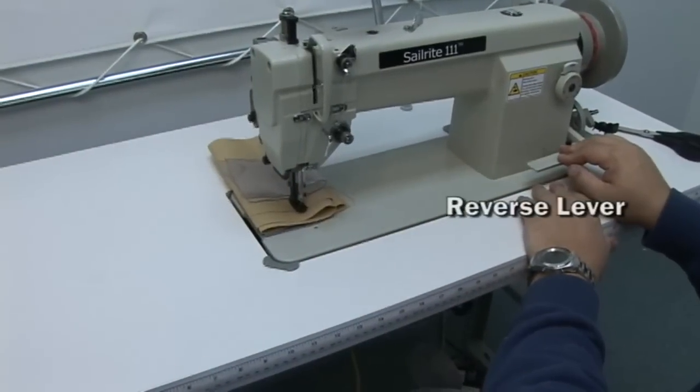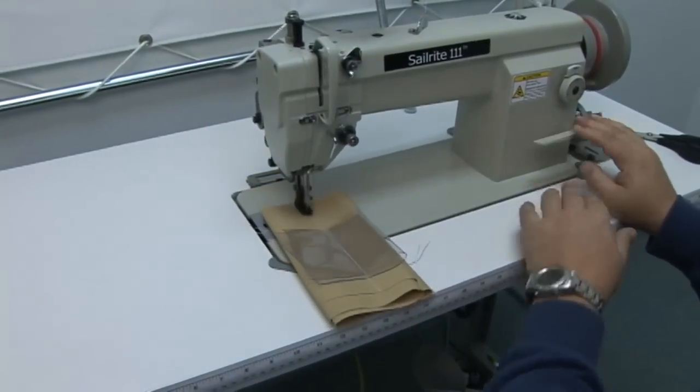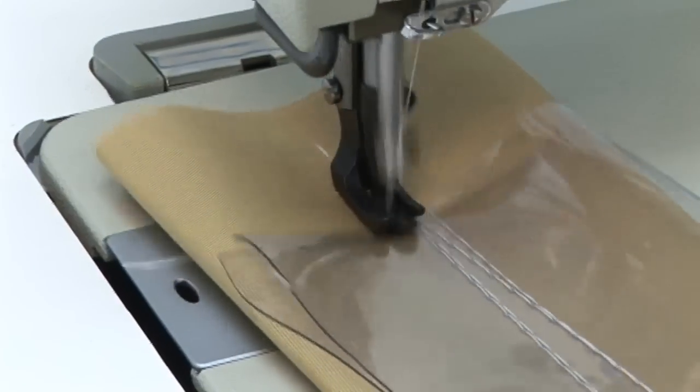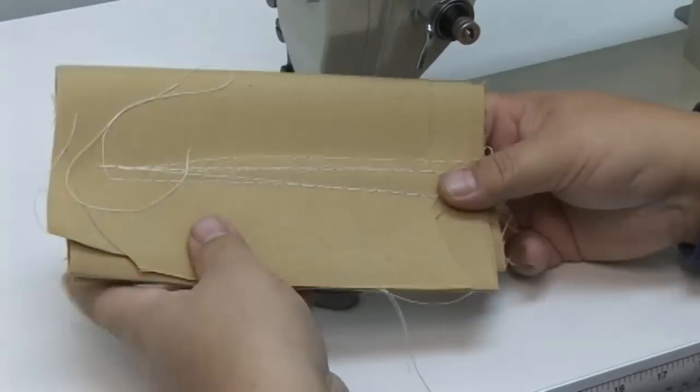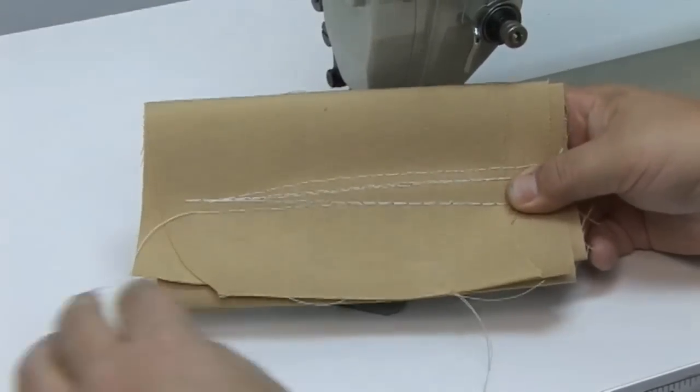Here to the right of the sewing machine is the reverse lever. We put it in reverse and walk over that assembly in reverse. No skip stitches. No broken needles. Looks good on the top and the bottom side as well.